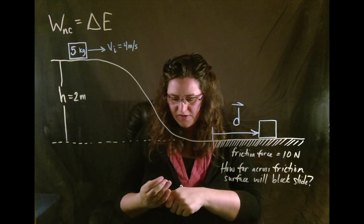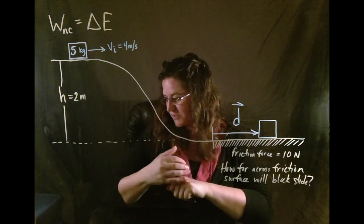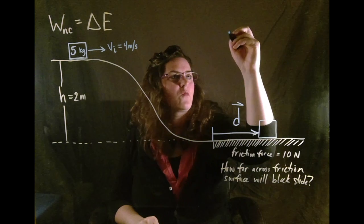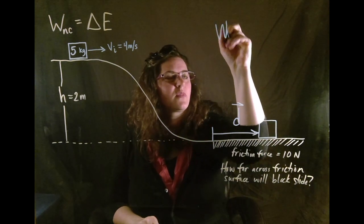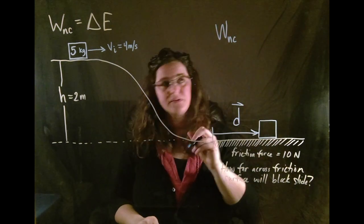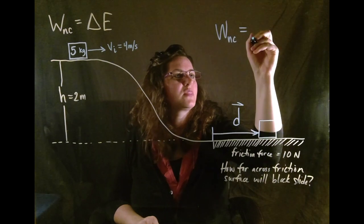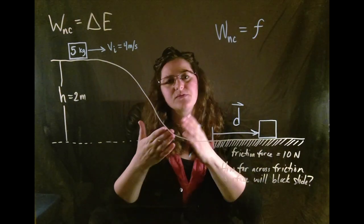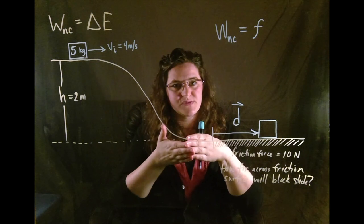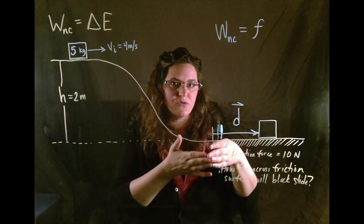Now let's go ahead and find the work done by the non-conservative force. So we know that work, the work done here is equal to the force. So it's equal to a force times the displacement times the cosine of the angle between them.